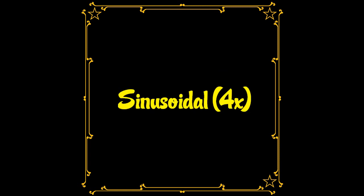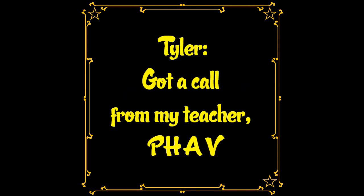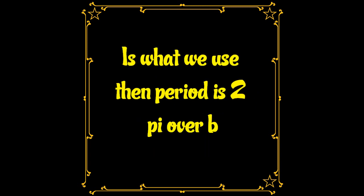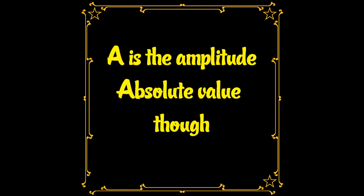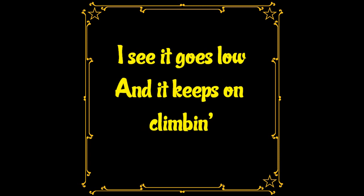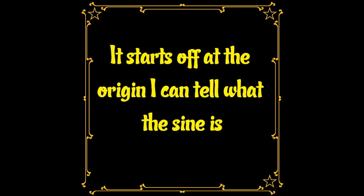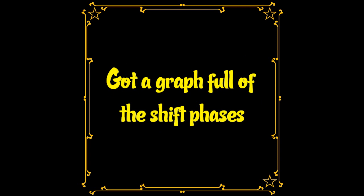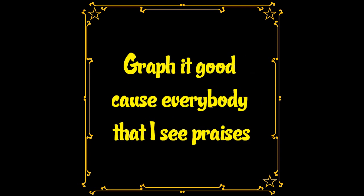Got a call from my teacher — PHAV is what we used in theory. It is two pi over B. A is the amplitude, absolute value though. This scales the y-line from center to the ends, yo. I see it go slow and it keeps on climbing. It's all soft at the origin, I can't tell what the sign is.